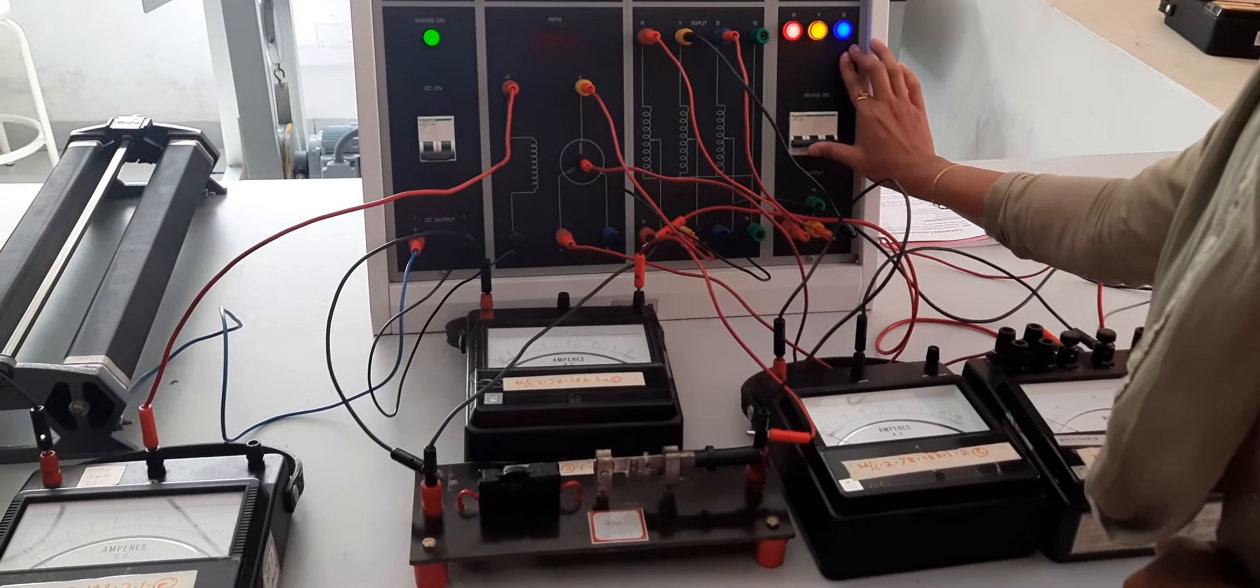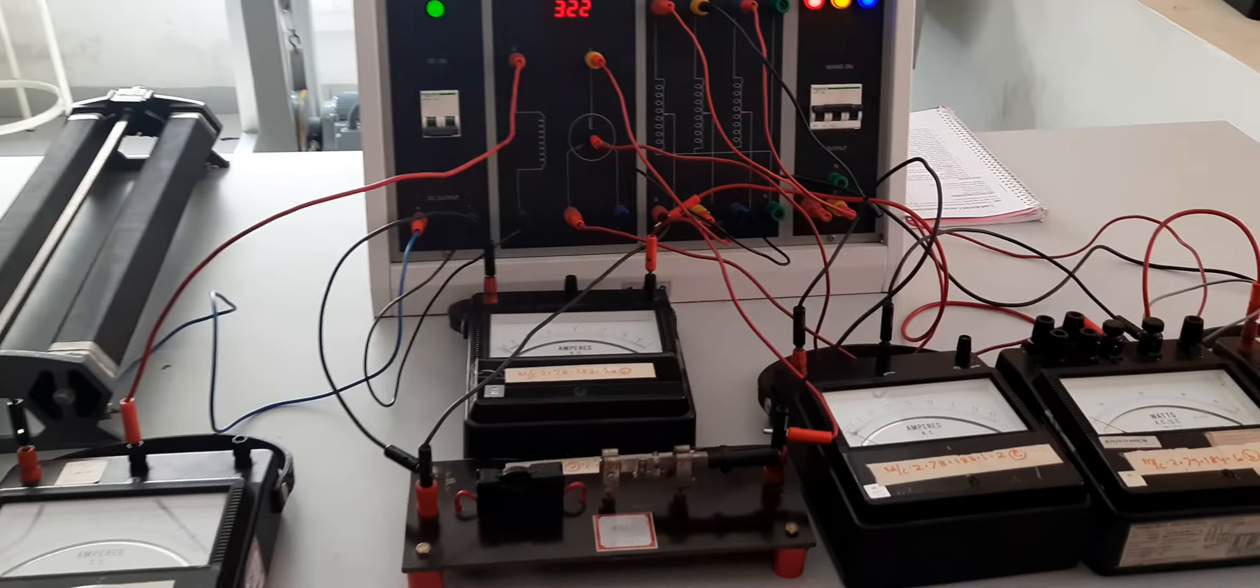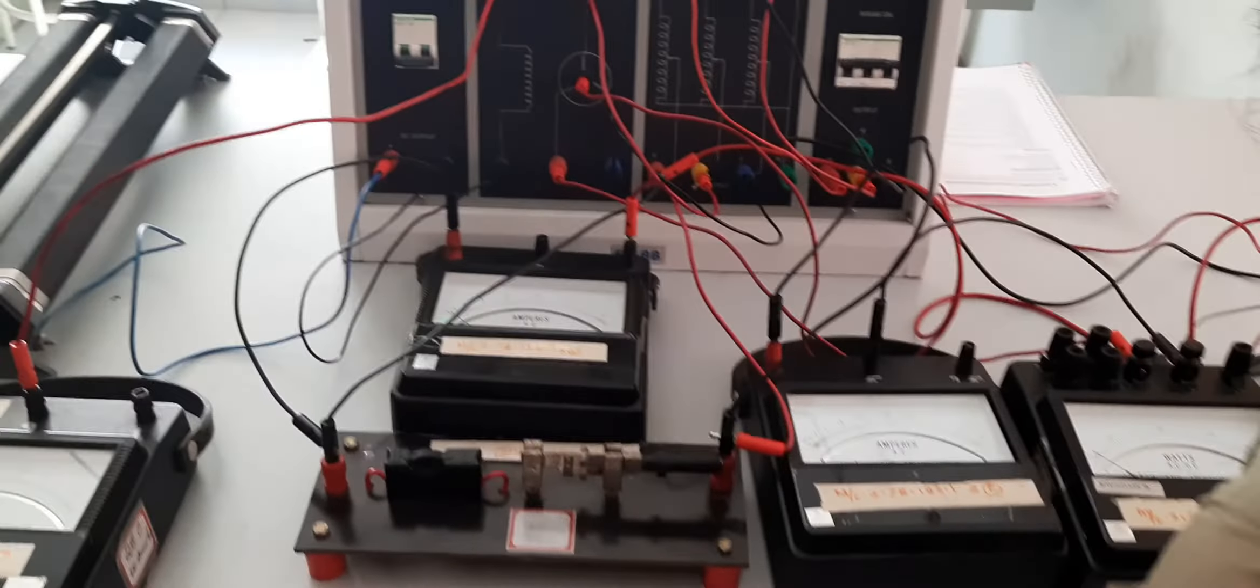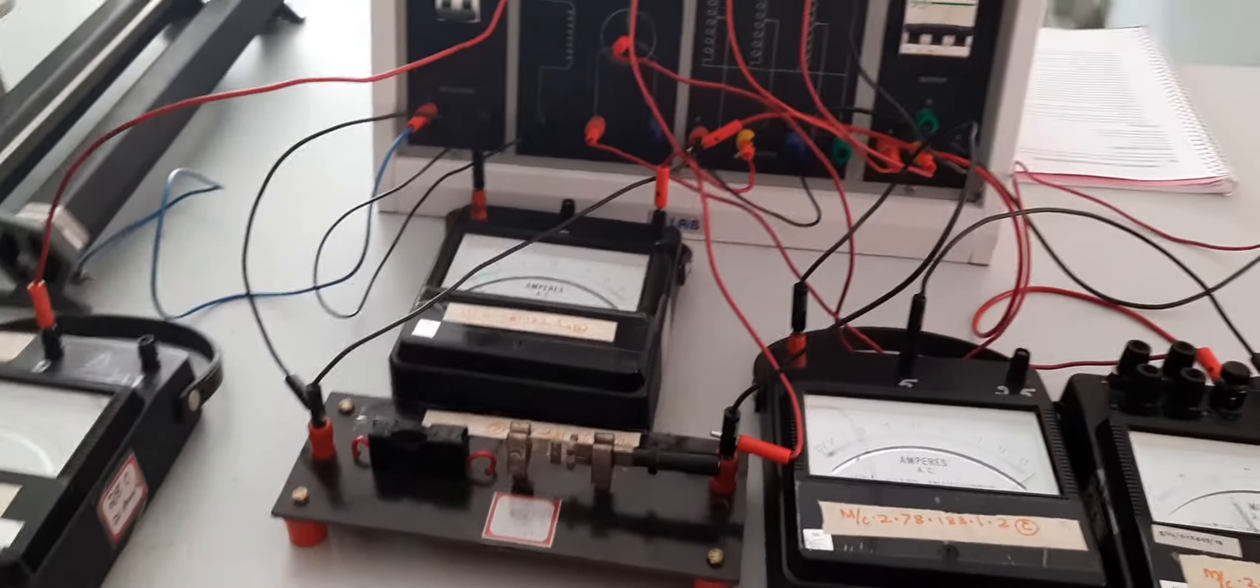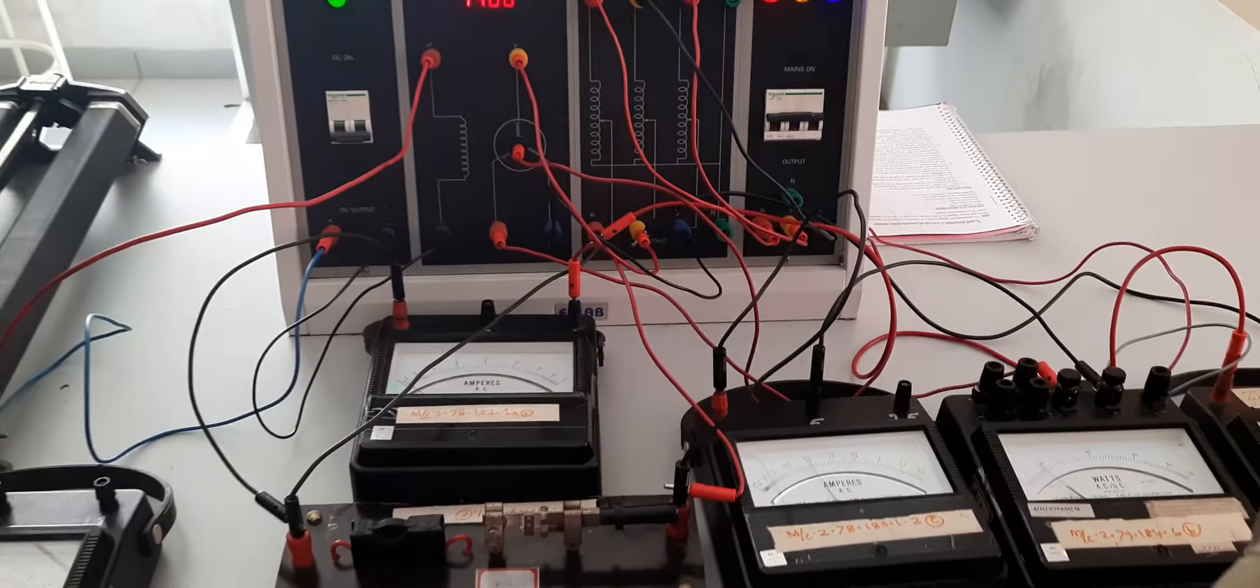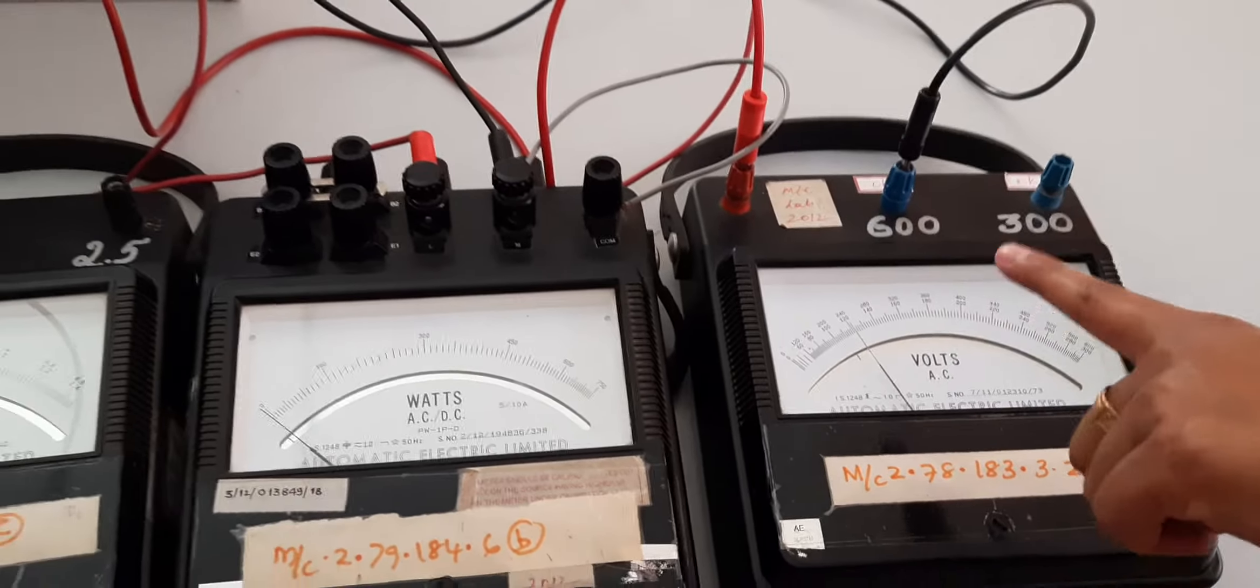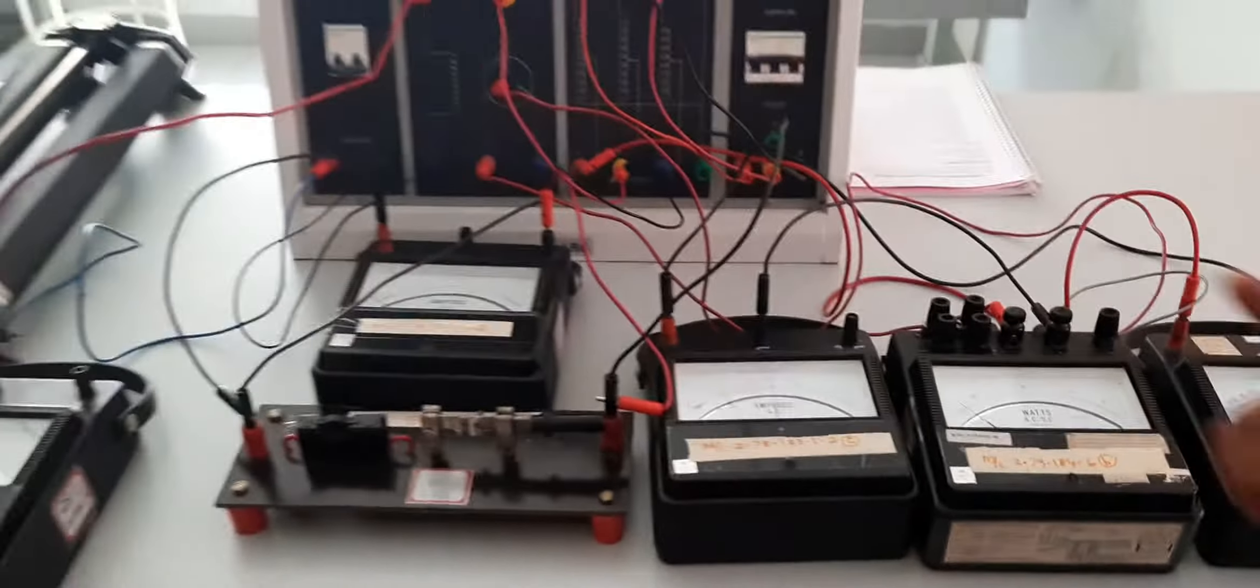So the PPST has to be closed. Now with the help of auto transformer, the voltage has to be given. The voltage has to be given to 240. You can see that till 240, that is 60% of the voltage has been given. Now once 60% voltage is given, this PPST has to be closed.